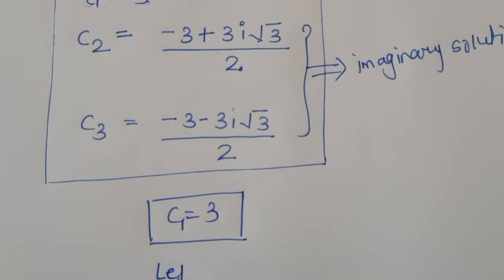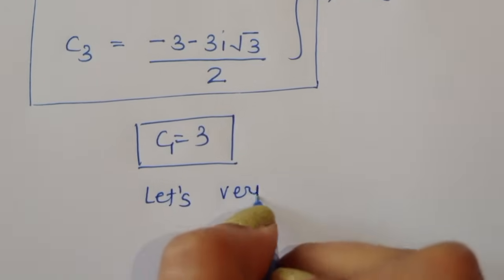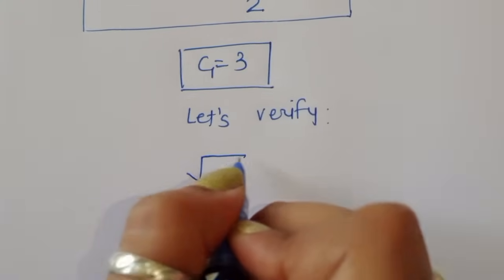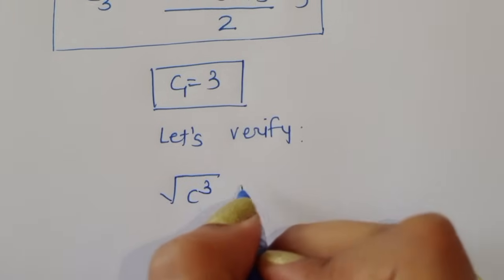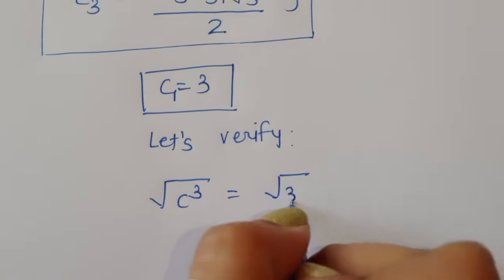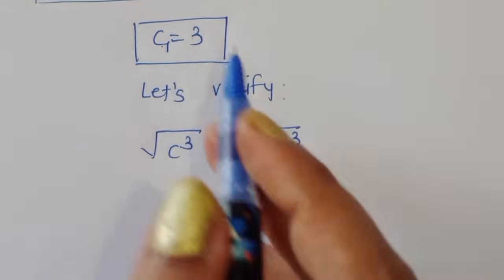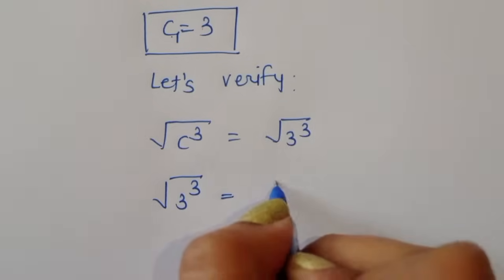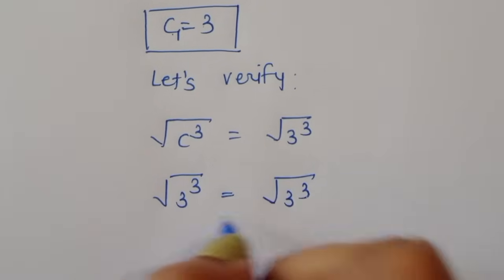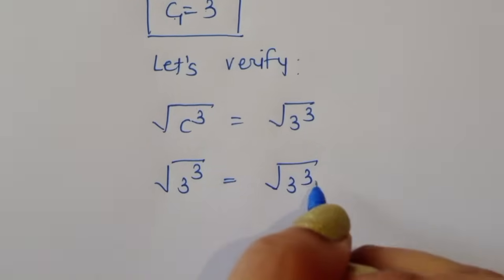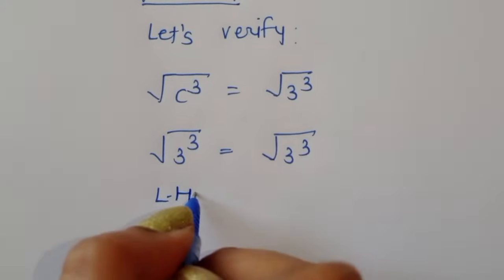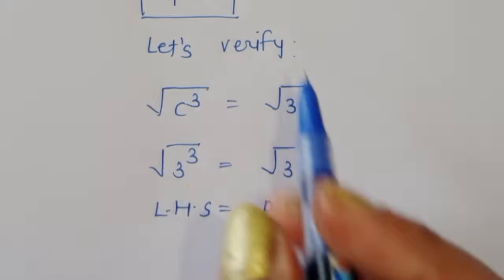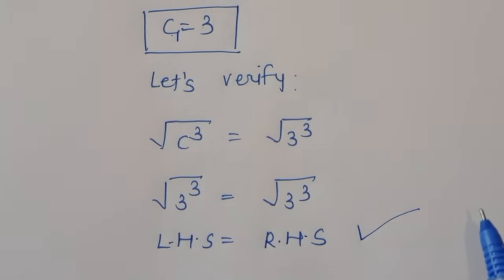Let's verify: substituting c equals 3 into the original equation, √(3³) equals √(3³). LHS equals RHS, so c equals 3 is confirmed as the correct solution. Thank you.